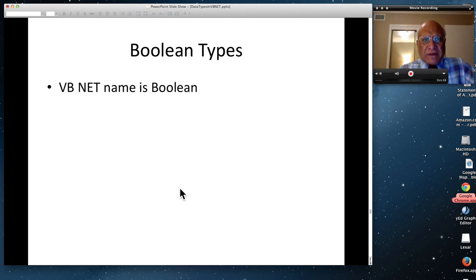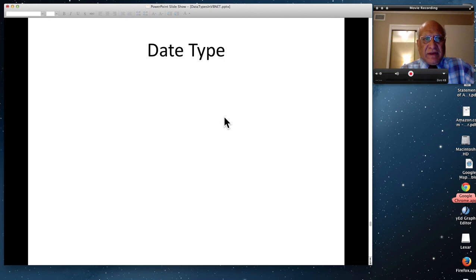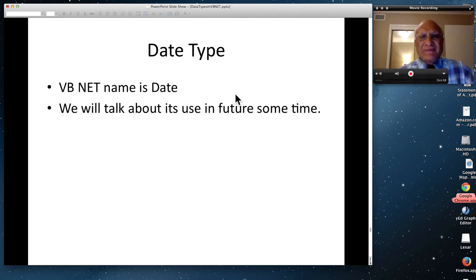And then boolean types are, well, VB.NET is boolean type. And can have only two possible values. True and false. And finally, date type, VB.NET name is date. And we'll talk about that in future sometime.